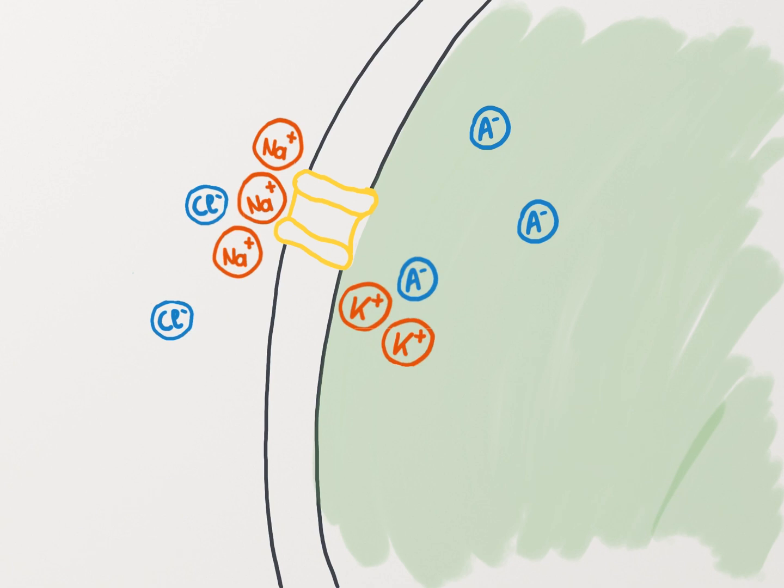The second result of the pump action is very important. It results in creating and supporting the concentration gradient across the membrane for both potassium and sodium. Remember that we just told you that the concentration of potassium is in general higher inside the cell, and the concentration of sodium is higher outside the cell?